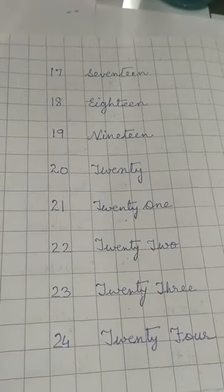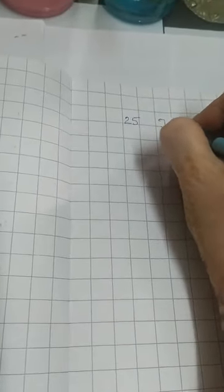After 24. Then 25. T-W-E-N-T-Y, twenty-five. Now spellings of 5. F-I-V-E, five. Twenty-five.